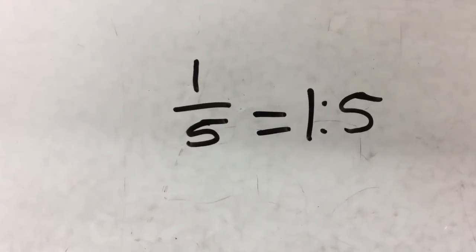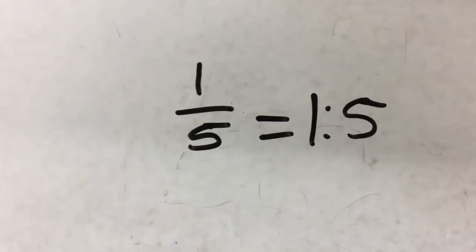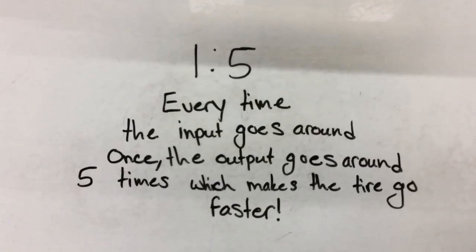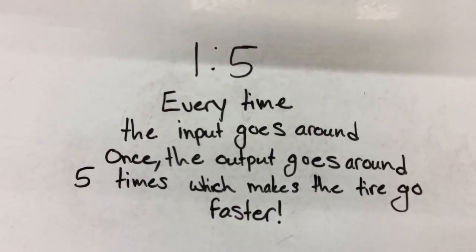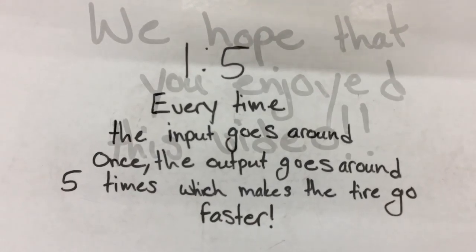1 over 5 is equal to the ratio 1 to 5. 1 to 5 means that every time the input goes around once, the output gear goes around 5 times, which makes the tire go faster.